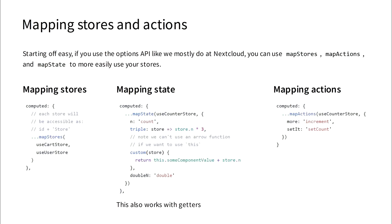Starting off simple — you created a store and you would like to use it in your Options API component. What you would need to use for this is the mapStores function. You just insert it into the computed block of your Options component, and every store that you pass will be available inside of that component as the store ID plus the 'Store' string.